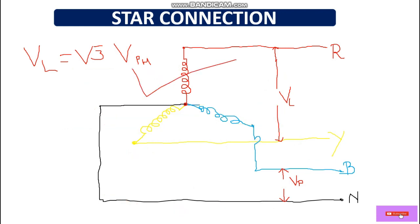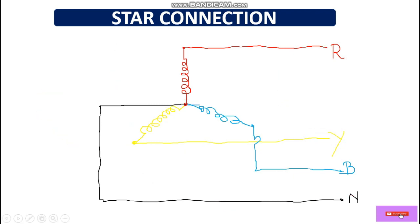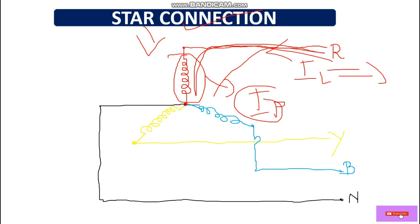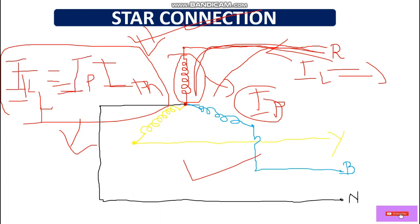Always remember: the voltage measured between two phases is called line voltage, and the voltage measured between a phase and the neutral point is called phase voltage. To calculate phase voltage: V-phase equals V-line divided by root 3, so 415 divided by 1.732 equals 240 volts. In a star connection, line current equals phase current — both are the same.